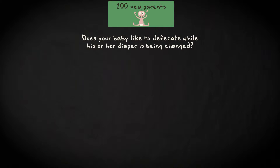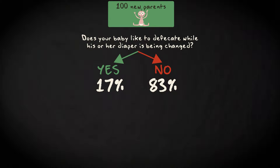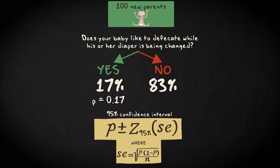Imagine you asked a sample of 100 new parents if their babies like to answer nature's call during the diaper changing process. 17% reported that this is the case. Our sample proportion P thus equals 0.17. The formula to compute the 95% confidence interval for a proportion is P plus and minus the Z-score for the 95% confidence level, times the standard error, which equals the square root of P multiplied with 1 minus P divided by N.